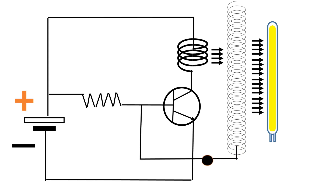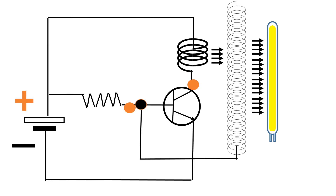A negative voltage flows from the secondary coil to the base of the transistor. It cuts the current flowing from base to emitter. It in turn cuts the current flowing through the collector and emitter. No electricity in the primary coil. No induction to the secondary coil.